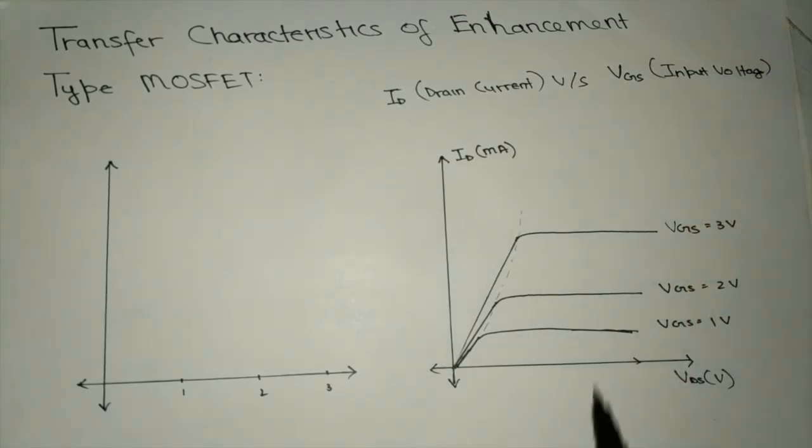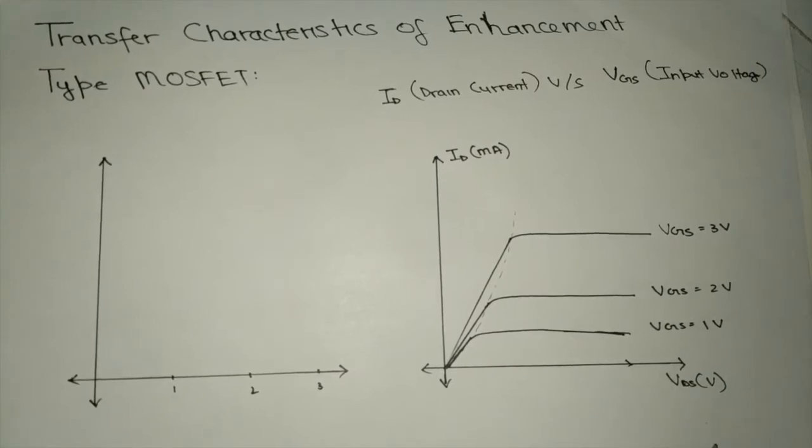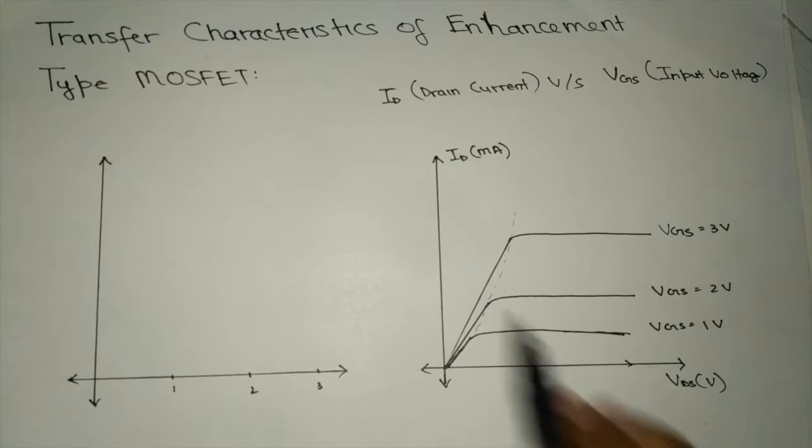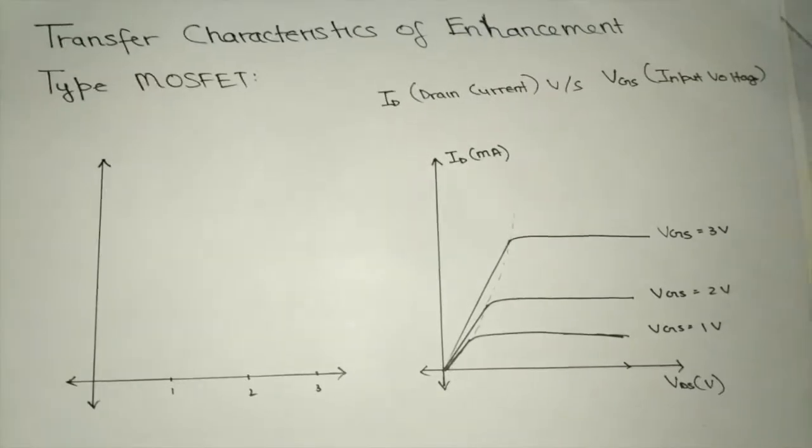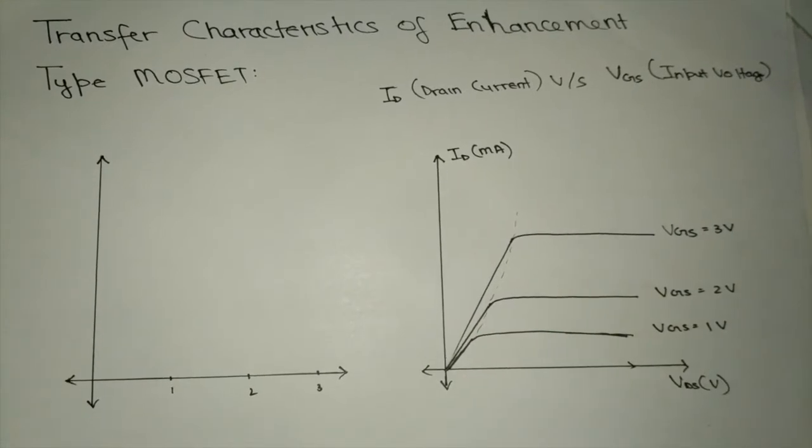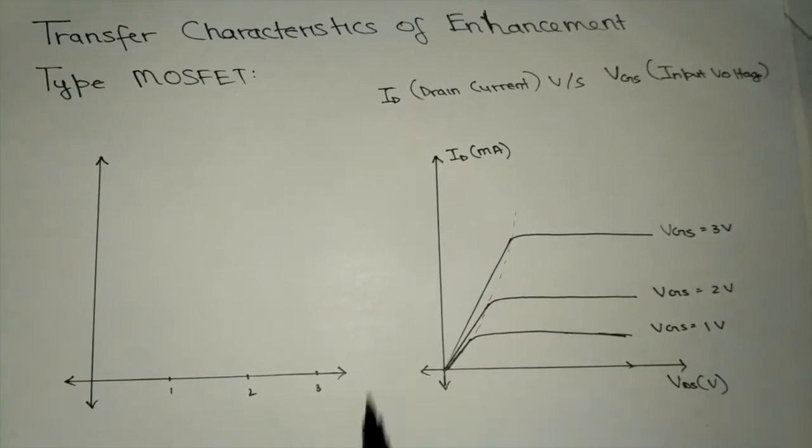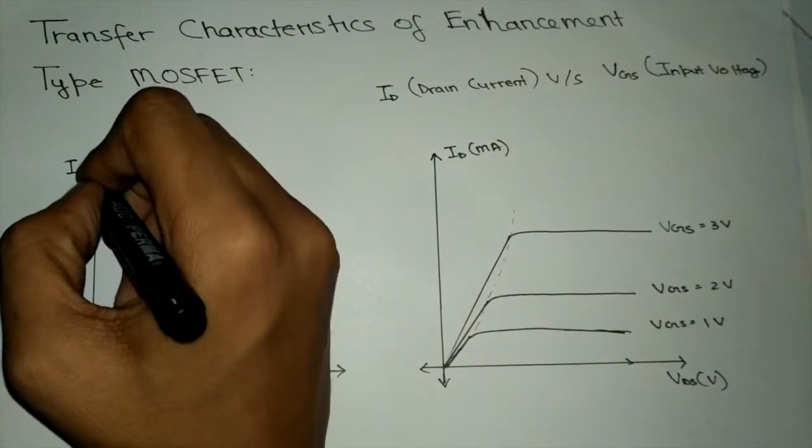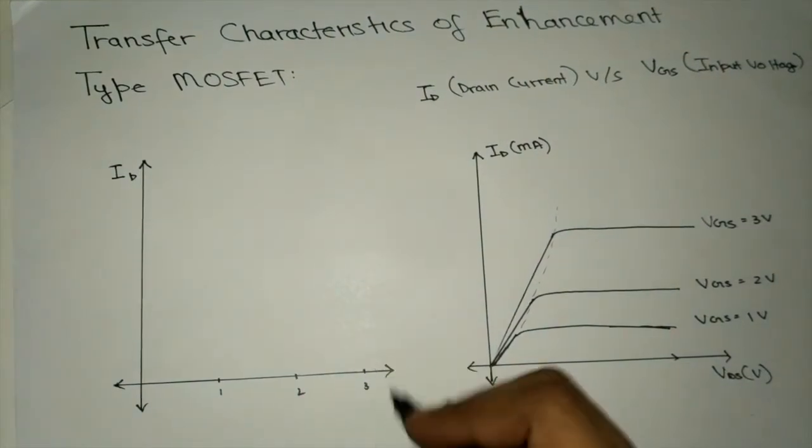As we see here, we have plotted a graph of the drain characteristics of an enhancement type MOSFET. In this, VGS has three values: VGS equals 3V, VGS equals 2V, and VGS equals 1V. For higher values of VGS, the value of drain current is also high. Now we have to plot the ID drain current versus the VGS.